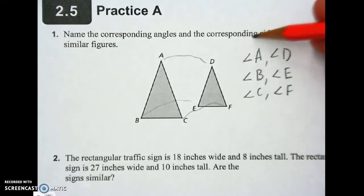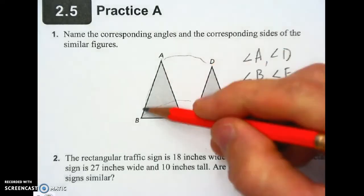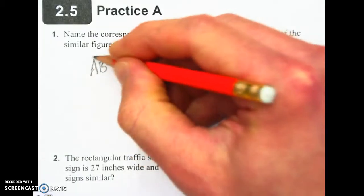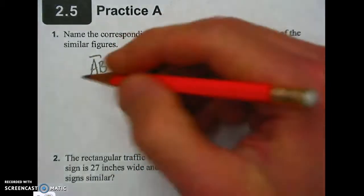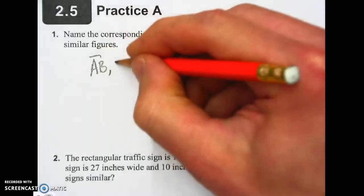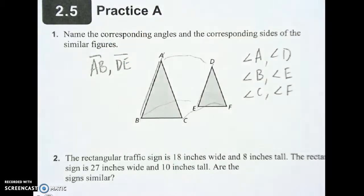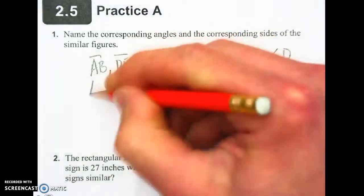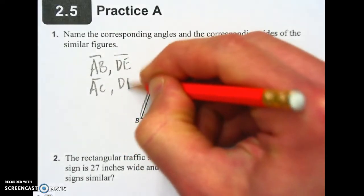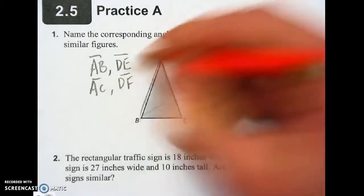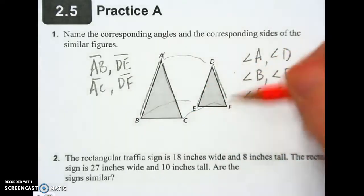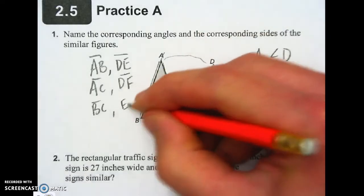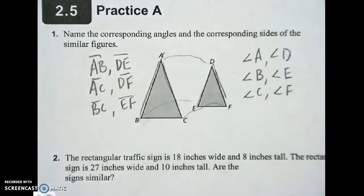Now I'm going to do the corresponding sides. So I'm going to do side AB with DE — I'd write AB together with a line on top to show it's a side, comma, DE. And then AC with DF — line on top. And then BC with EF. And we've got our corresponding angles and our corresponding sides.